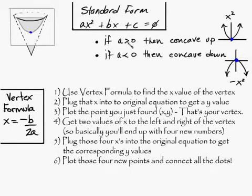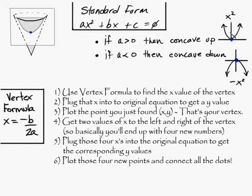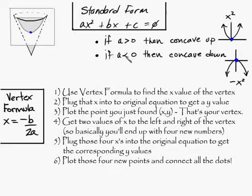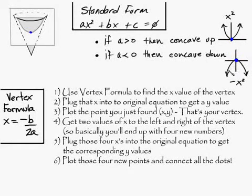If a is greater than 0 — meaning all positive numbers — then you'll have concavity up, basically concave going upward, kind of like a concave lens facing upward. And if a is less than 0 — meaning all values of a are negative, like negative x squared where you have a negative 1 or a negative 10 — then it's concave down.